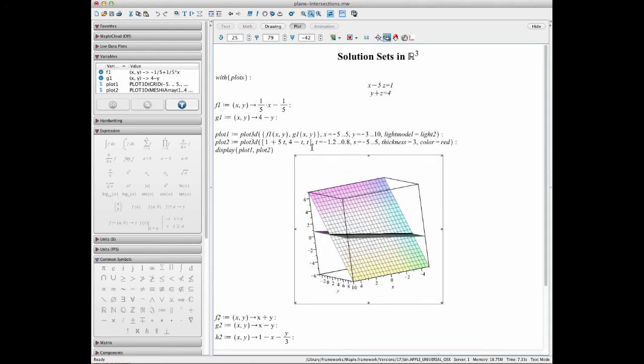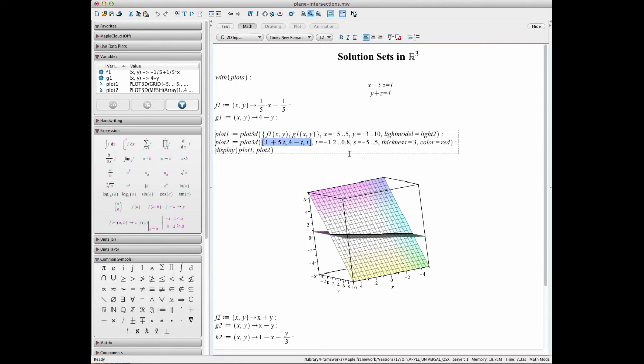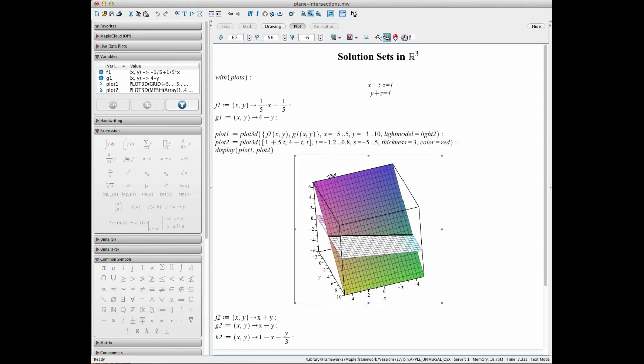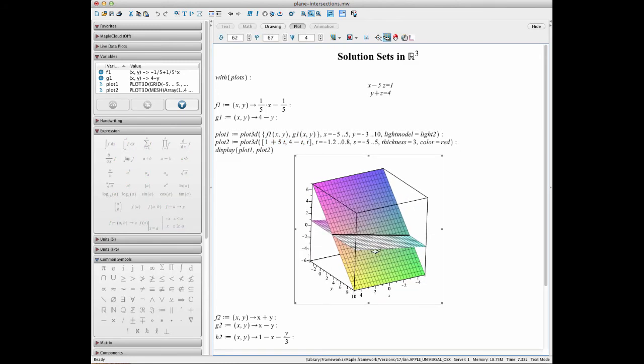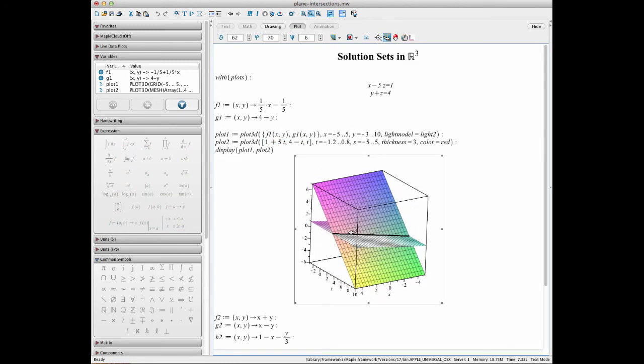So we can actually tell immediately from the form that our vectors of solutions took that it would be one-dimensional because for any real value of t I plugged in, I would get a different point that is a solution vector. So even without knowing that the intersection of these two planes in particular was a line, we could look at our solution and read that off. So we'd know that for some parameter t that we could vary, we would see some point on our solution.